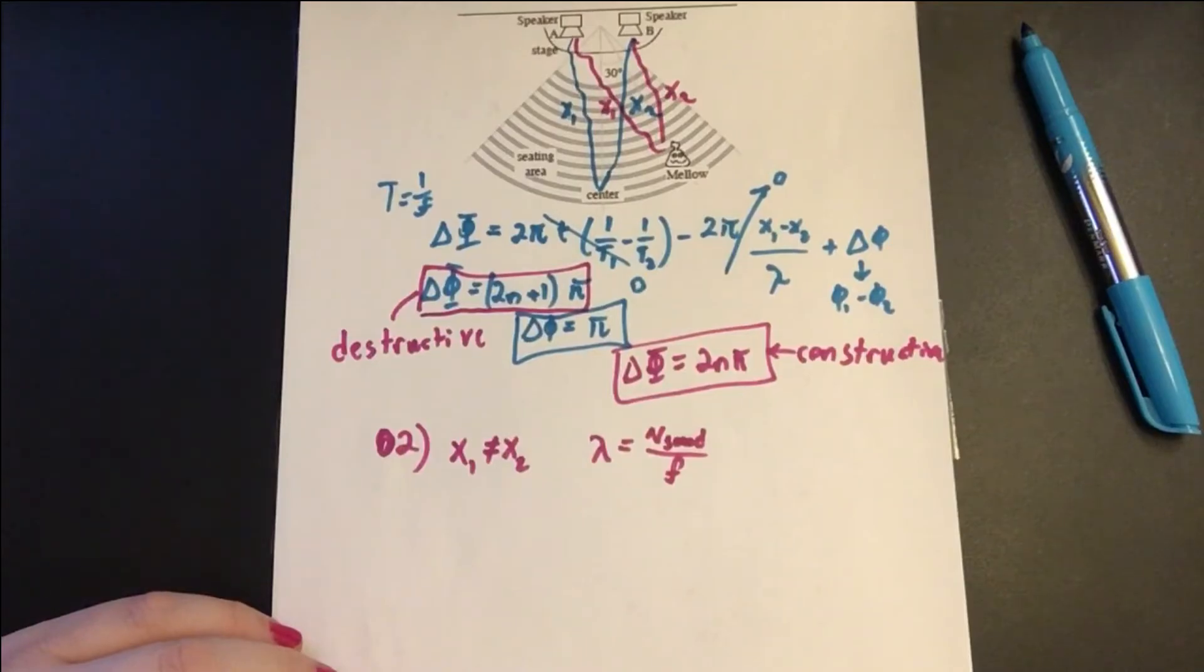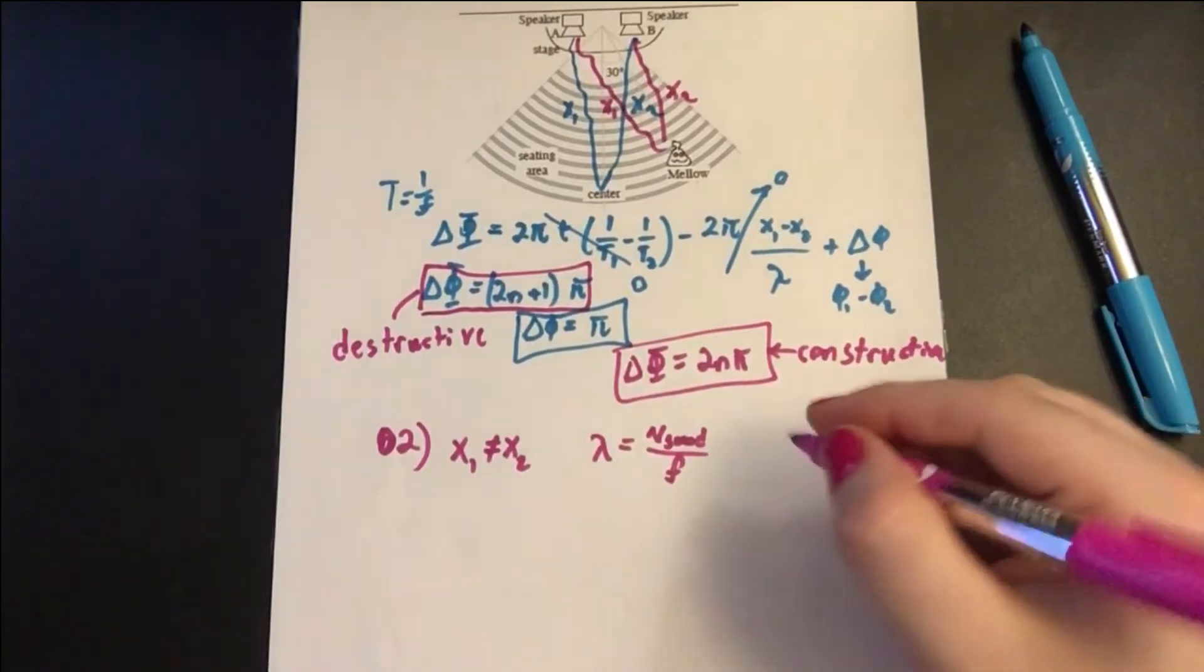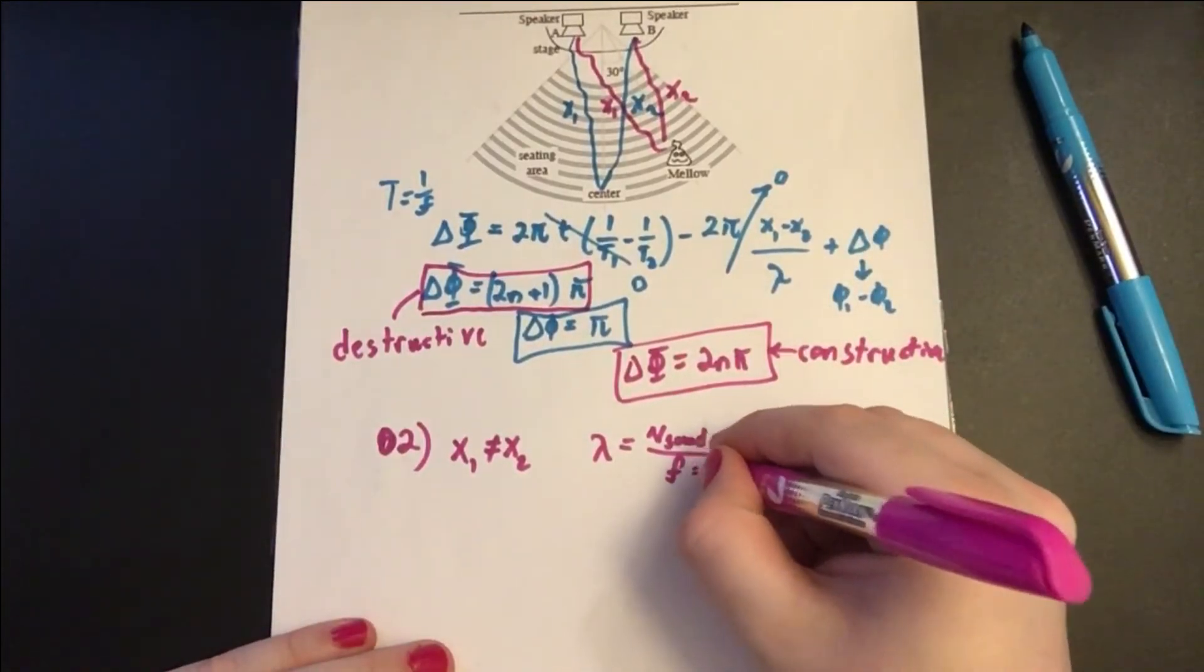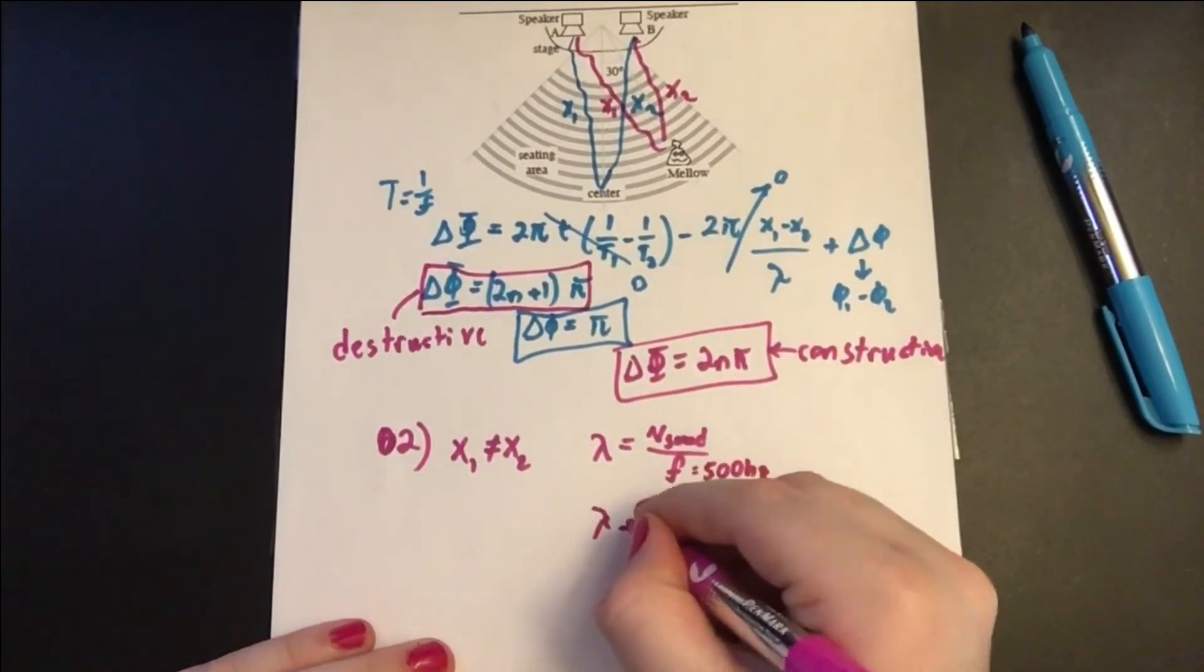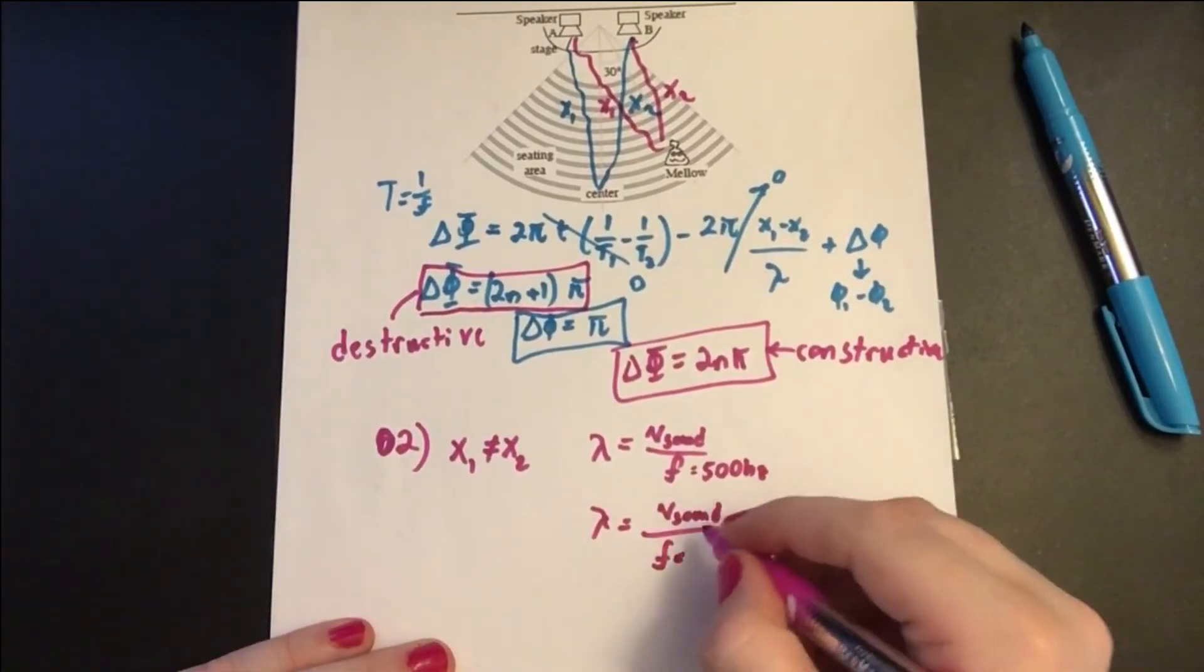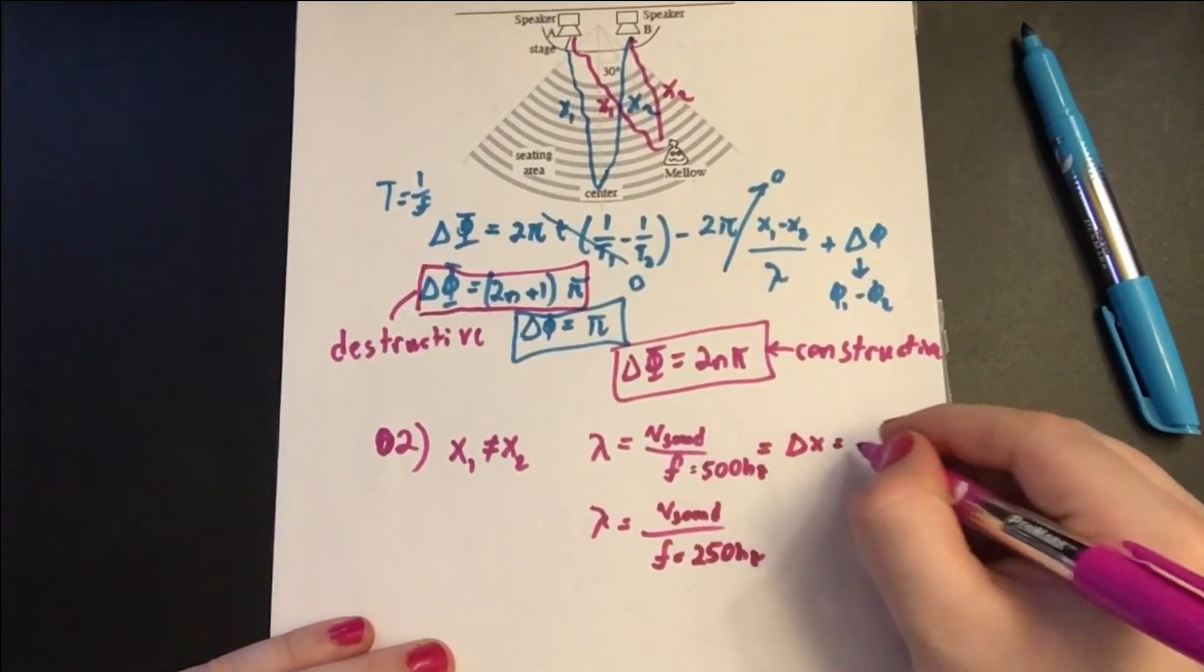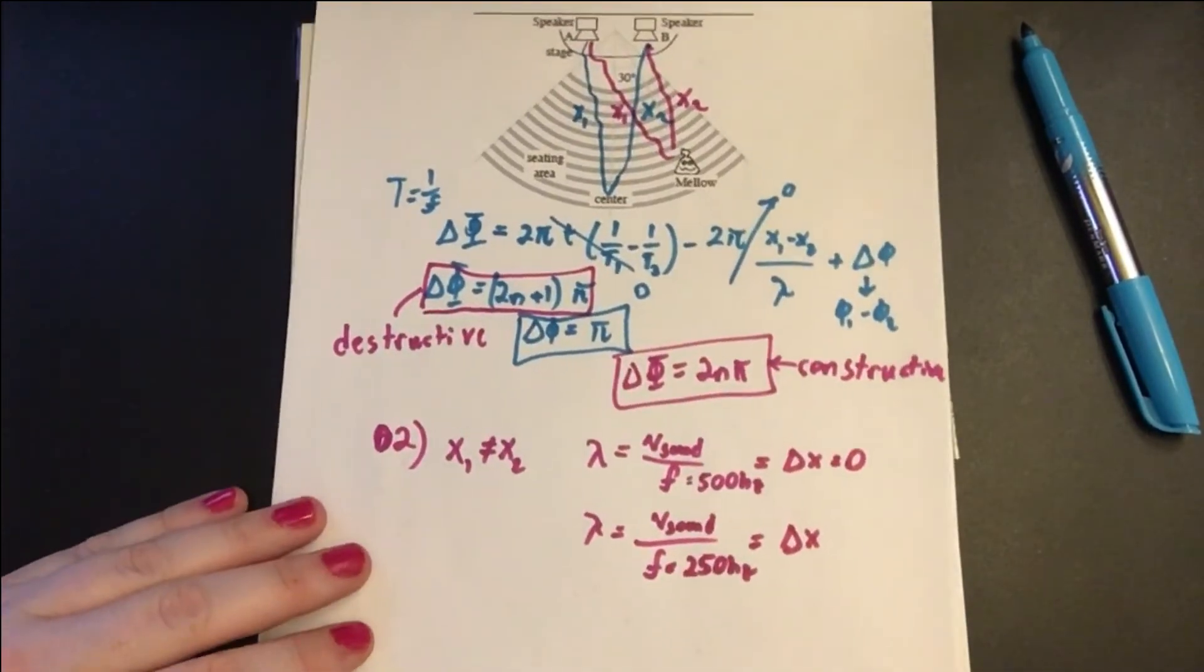So that means we are getting 250 hertz. So our frequency in the original problem in part a was 500 hertz. In the new problem, we have a frequency of 250 hertz. And here this equals Δx, where Δx is 0. And here this equals Δx, where we don't know what it equals, but we know it's not 0.